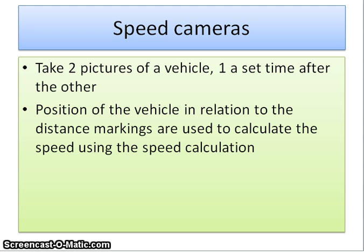Average speed cameras use a pair of cameras to work out the average speed of a car. The cameras read the car's number plate and record the time when the car passes each camera. The distance between the two cameras is known. So the car speed can be worked out using the average speed equation.